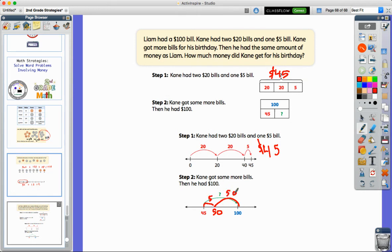So all together what's missing is 55. So he had 45 to start with. To end up with the same amount as Liam had, a hundred dollars, he had to get 55 for his birthday.